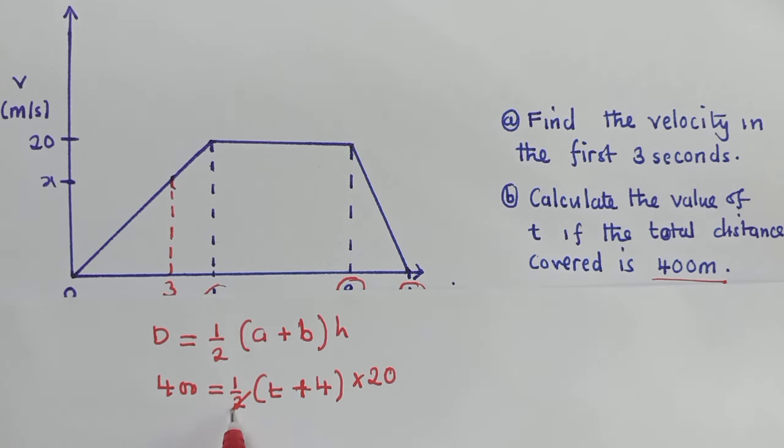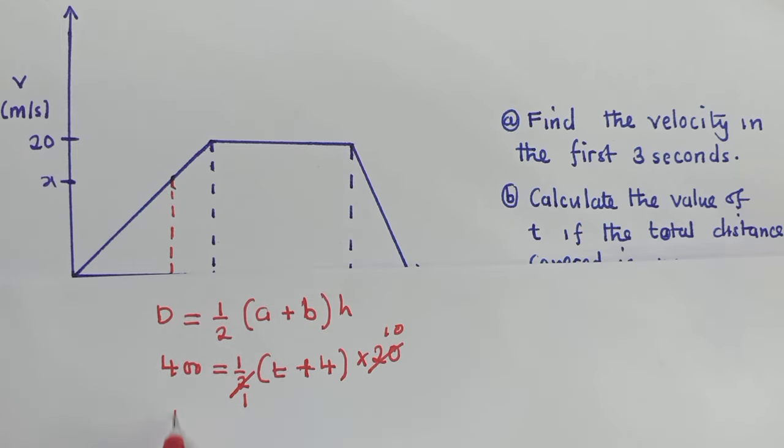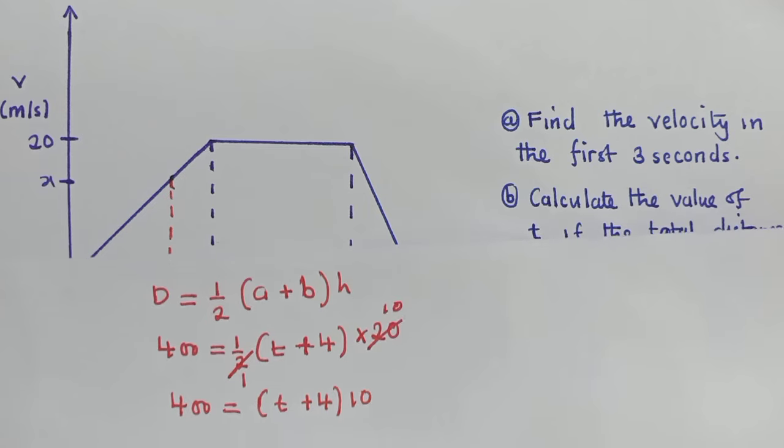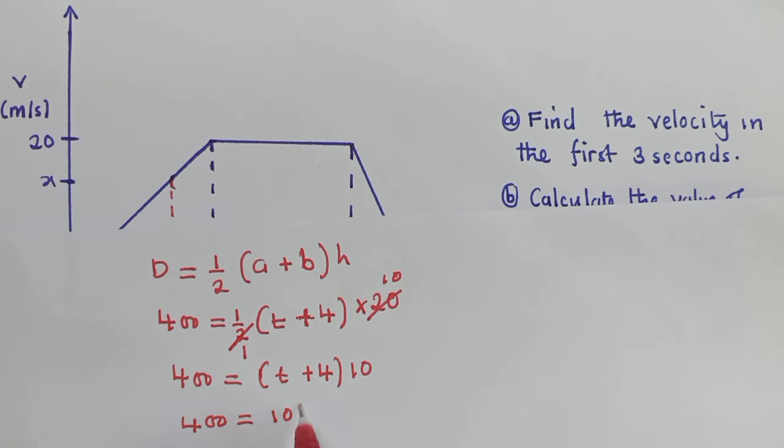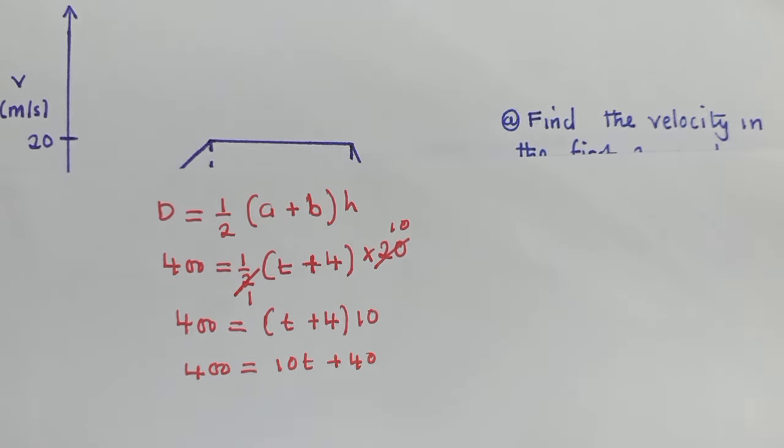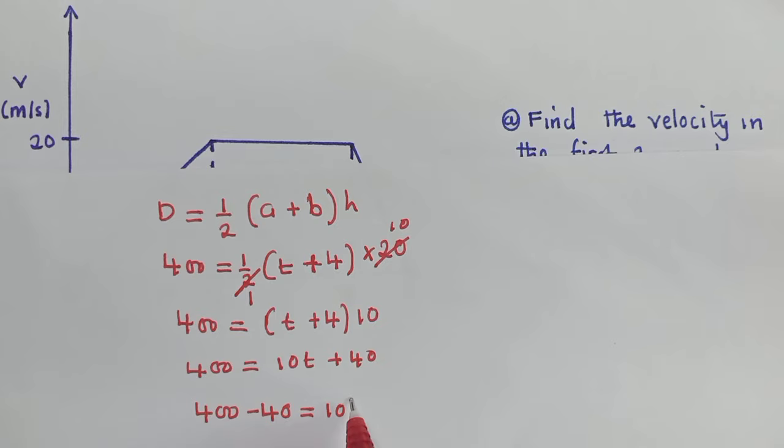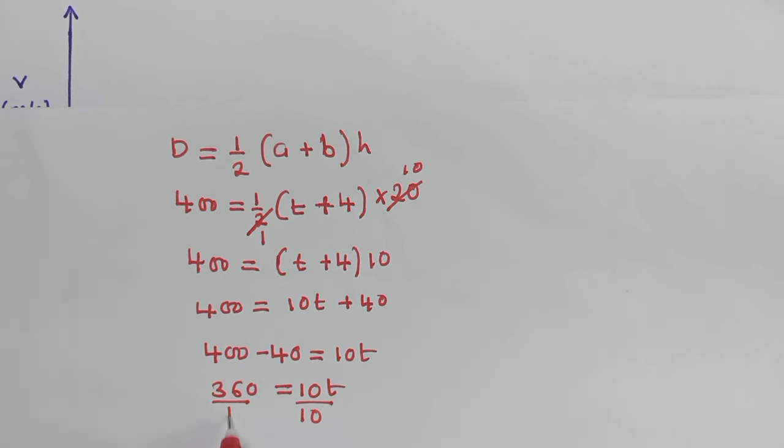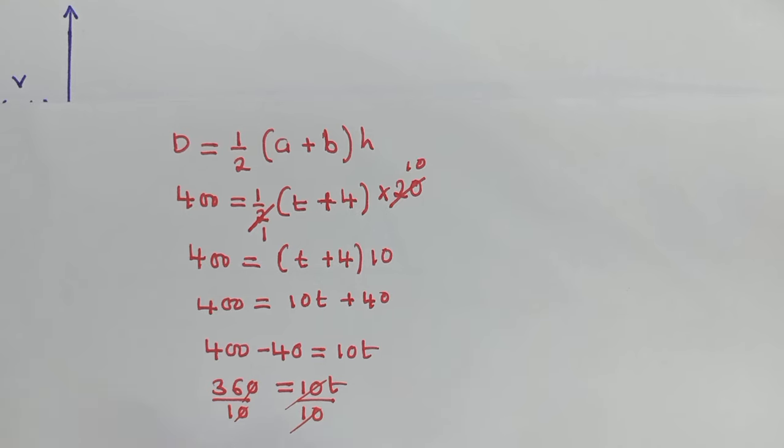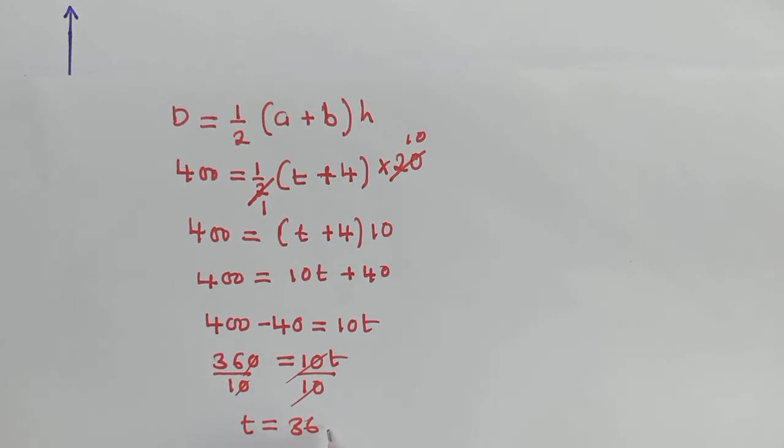So here we can divide 2 into 20, it's 10. So we have 400 is equal to (t plus 4) times 10. So here we distribute to get rid of the brackets. We have 10t plus 40. When we subtract 40 from 400, we will remain with 360, which is equal to 10t. So we divide by 10 by 10. The value of t here will be equal to 36 seconds.